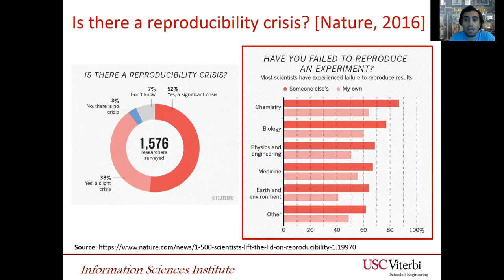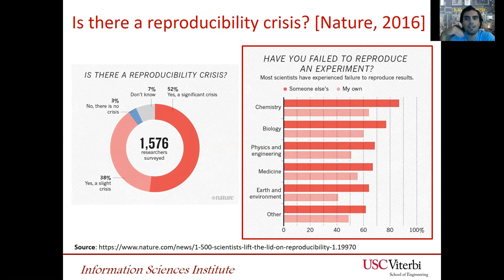These respondents came from different areas ranging from chemistry, biology, physics, engineering, AI, etc. What I thought was most relevant was that they also asked whether respondents had failed to reproduce their own experiments at least once. It turns out that nearly 50% of people across all domains have failed to reproduce their own experiments at least once, which tells you that there are many things to improve.